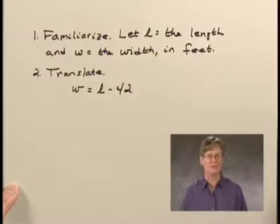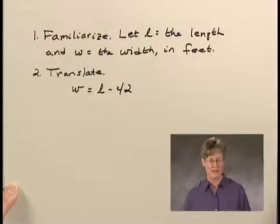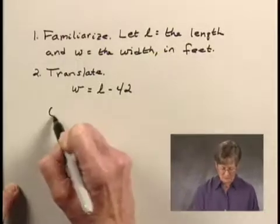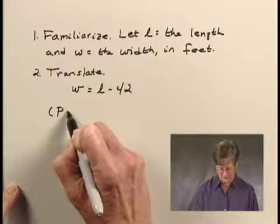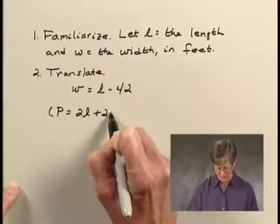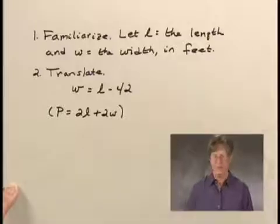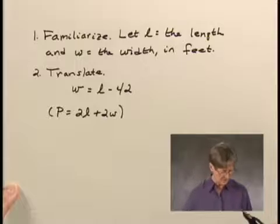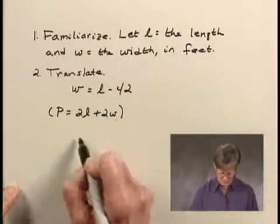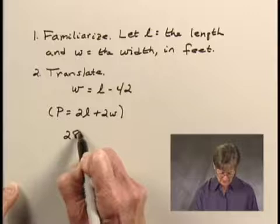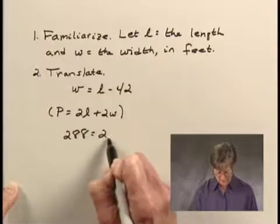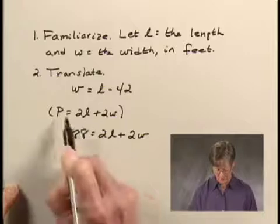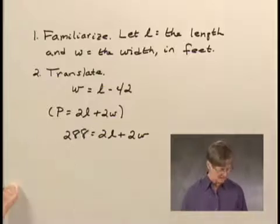Now we're also told that the perimeter of the court is 288 feet. Remember the formula for the perimeter of a rectangle with length L and width W is P equals 2L plus 2W. So we'll use this formula to translate to a second equation. We will write that the perimeter, 288, is equal to 2L plus 2W. I'm just substituting 288 for P here.